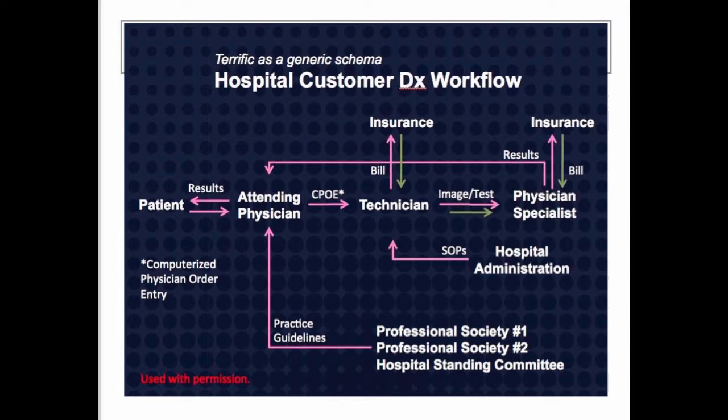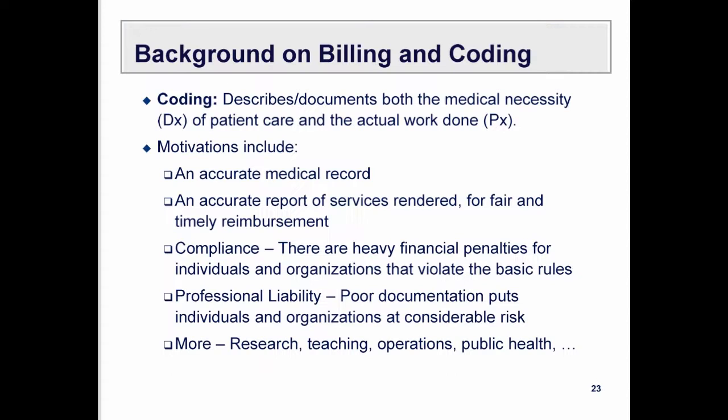What you're seeing in HCUPnet is typically just the facility charge — but the physician also bills separately. Coding is how you get reimbursed. You need both a procedural code and a diagnostic code. Insurance companies won't reimburse you without demonstrating medical necessity. Every claim submitted to the insurance company must include a diagnosis and a procedure, and there must be a reasonable link between the two.